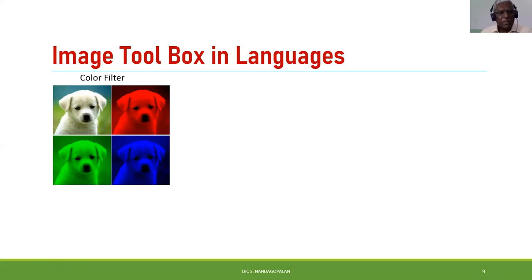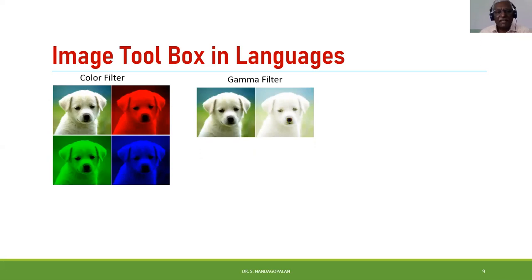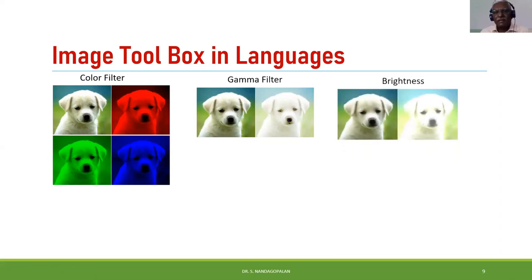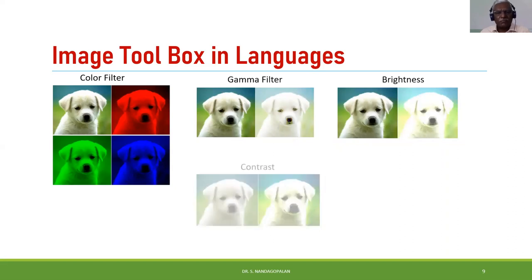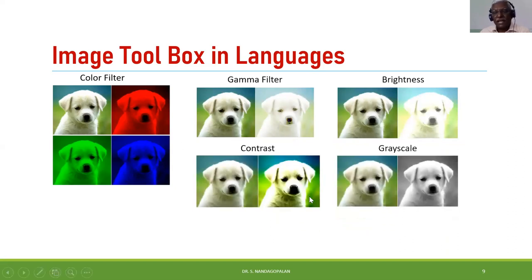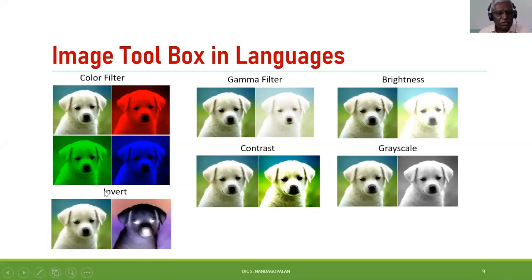For example, color filtering can extract RGB channels directly. A gamma filter increases brightness significantly — gamma is different from brightness and contrast. You can convert a 24-bit color image to an 8-bit grayscale image, and you can also invert a color image. All these manipulations can be done using image processing tools, and arrays serve as the underlying data structure.